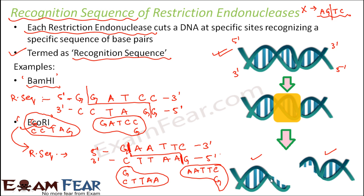Now if you look at this picture, you can see one part and another part. This part has just one single-stranded portion — you just have TTAA without the complementary bases. Similarly on the other part you just have AATT without their complementary base pairs. These types of ends are known as sticky ends. Why are they called sticky ends? Because these ends have only single bases without their complementary base pairs, so they are sticky in nature — whenever they find their complementary bases they are going to stick there.